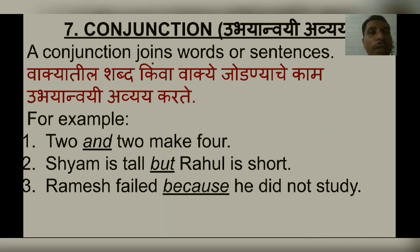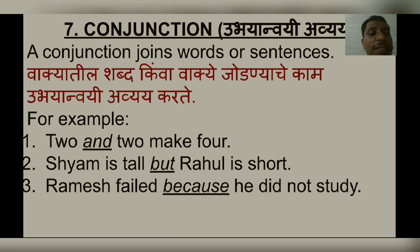Seventh, conjunction. A conjunction joins words or sentences. For example: '2 and 2 make 4' — the word 'and' joins two words. 'Sam is tall but Rahul is short' — the word 'but' joins two sentences, so it is a conjunction. 'Ramesh failed because he did not study' — 'because' joins two sentences, so it is a conjunction.